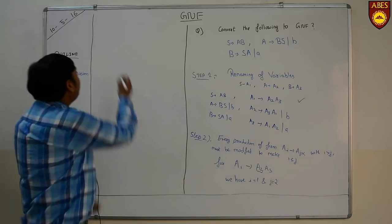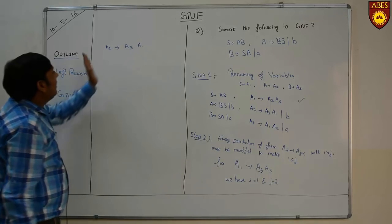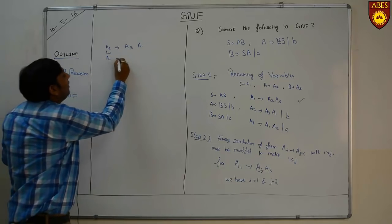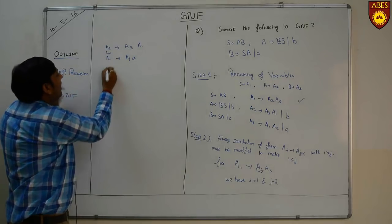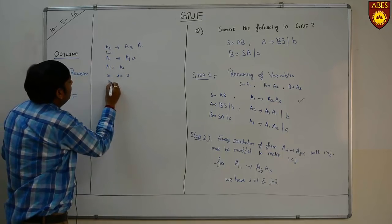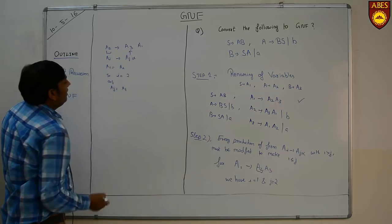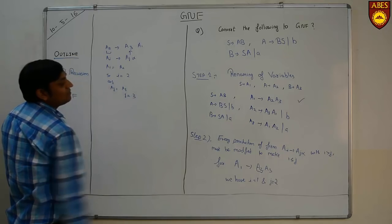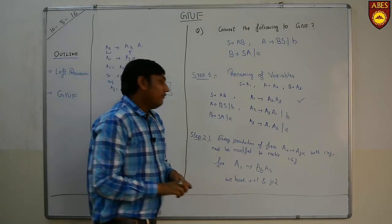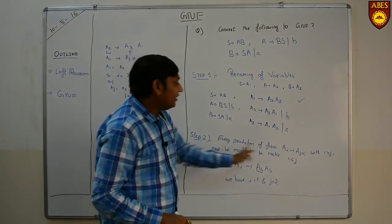For the second variable, A2 tends to form A3 A1. Here A2 is Ai with i equal to 2, and A3 is Aj with j equal to 3. Since i equals 2 is less than j equals 3, we don't need to modify this production either to satisfy i less than or equal to j.